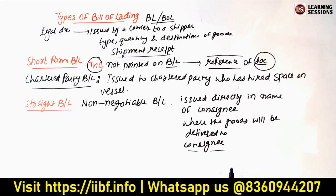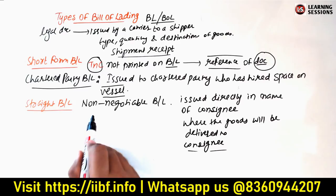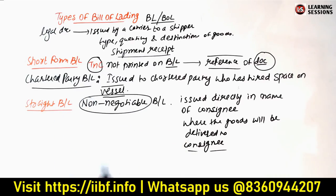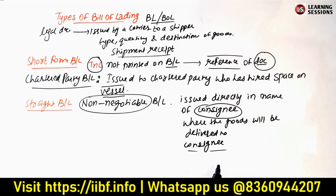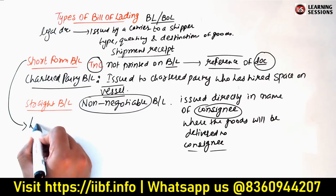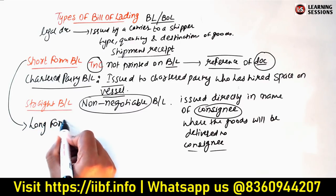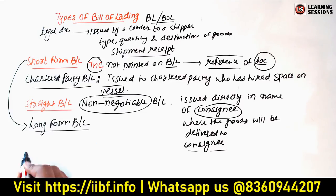Third type: Chartered Party Bill of Lading. This is issued in the name of the party that has taken space on a vessel/ship. Fourth type: Straight Bill of Lading. This is a non-negotiable Bill of Lading issued in the name of the consignee, to whom the goods will be delivered. Fifth type: Long Form Bill of Lading. Unlike the short form, all terms and conditions of the Bill of Lading are printed directly on it.